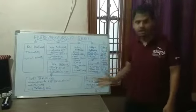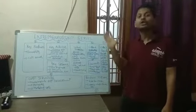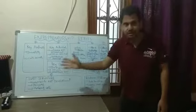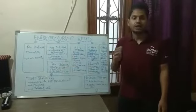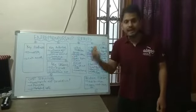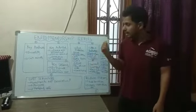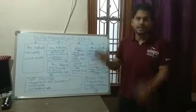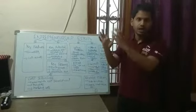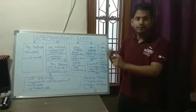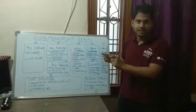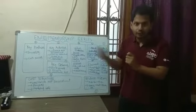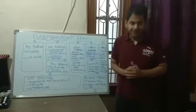So these are the nine parameters which you need to consider when you are going up to the startup. These nine things should be there on your whiteboard, and every time you need to change this as you evolve. Thank you.